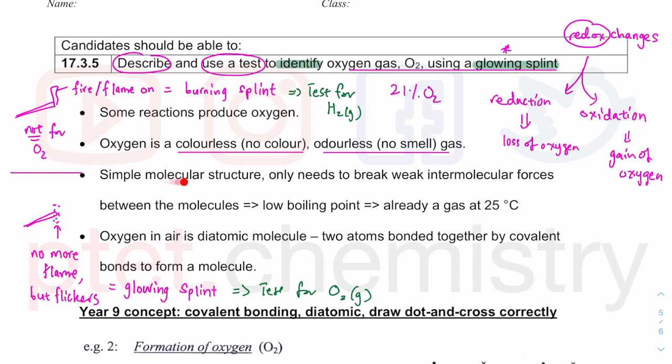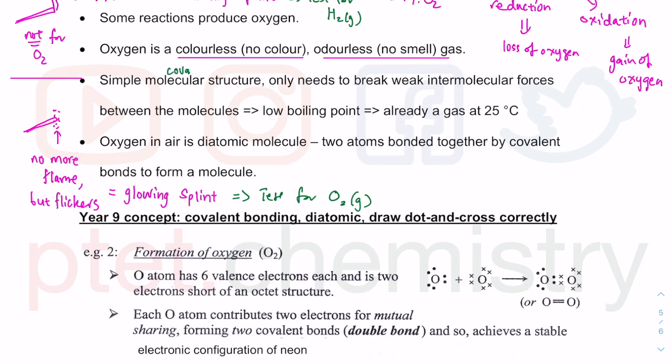O2 has a simple molecular structure or simple covalent structure. This is part of year 9 combined science chemistry with dot and cross diagrams. You call it a diatomic molecule because both oxygen atoms want a fully filled outer shell, which is stable. You've got eight electrons in the outer shell around each oxygen atom, with two covalent bonds, so four electrons shared altogether.